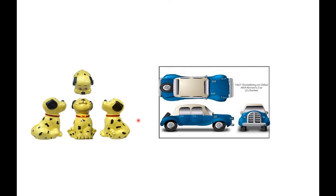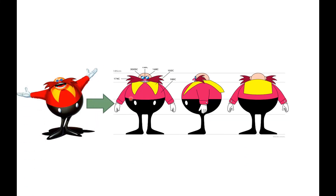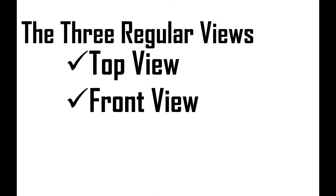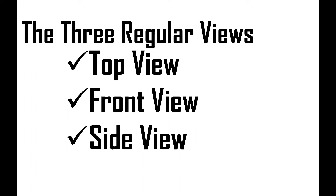Observe the pictures of this dog. This dog is projected with its front view, right side view, left side view, and top view. This man is projected with its front view, side view, and rear view. In orthographic drawing, we have three regular views. The first one is represented by the top view, number two is the front view, and number three is the side view.